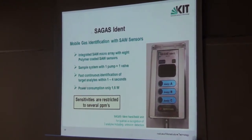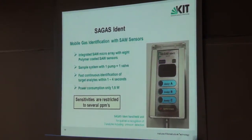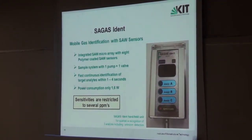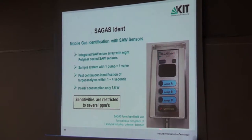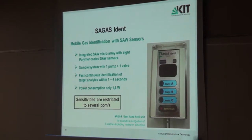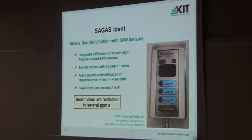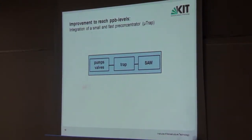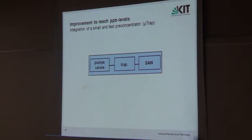However, without further sample treatment, sensitivity is restricted to several PPMs only. We cannot reach the very interesting PPB level, where some toxic gases may already exceed workplace limits. This is a restriction — the instrument as-is is good only for simple identification, such as checking whether a tank has been cleaned or contains residual solvents. To reach the PPB level, we need a sample preparation step, and here we introduce a pre-concentrator called a micro trap.